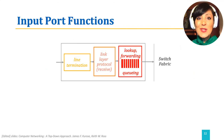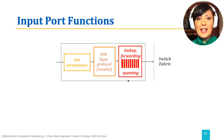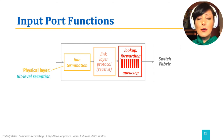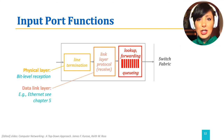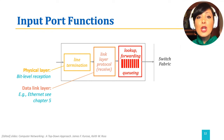Taking a closer look at the input port functions: line termination is the section responsible for physical layer termination of the signal for receiving the bits on the line. The next step is link layer termination, which runs the data link layer protocol to talk to the other side of the incoming link.